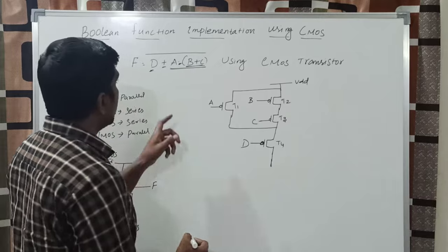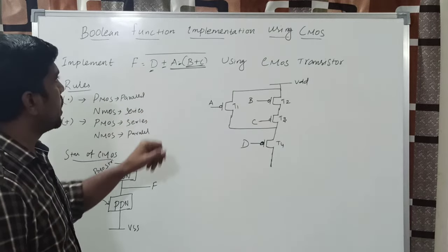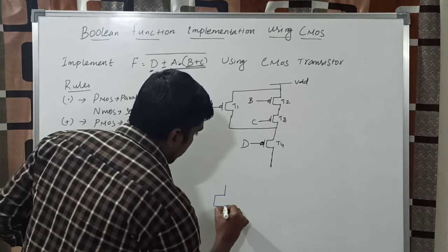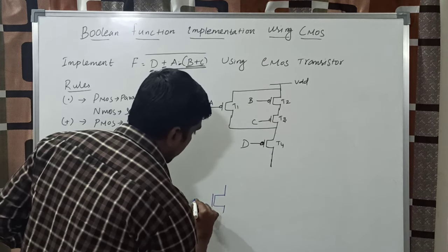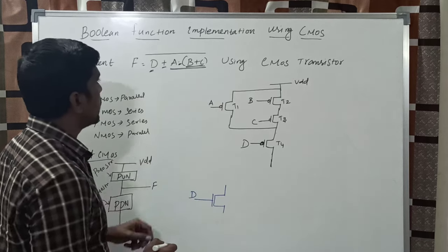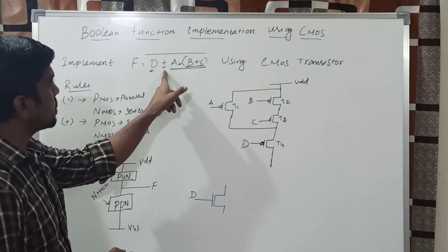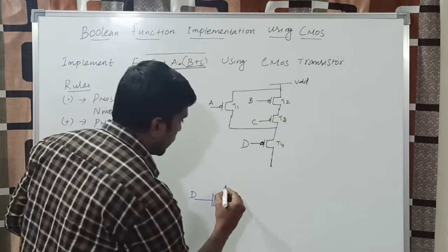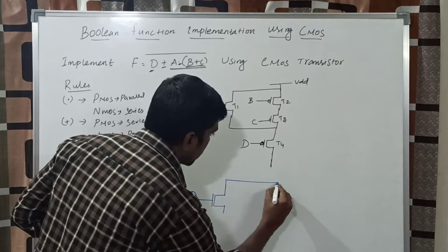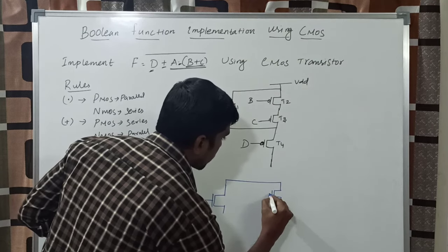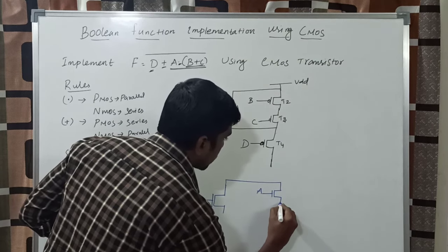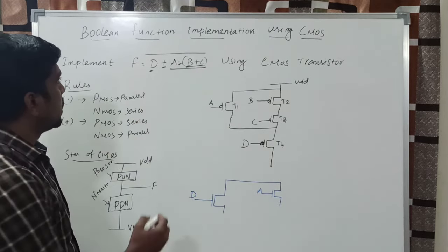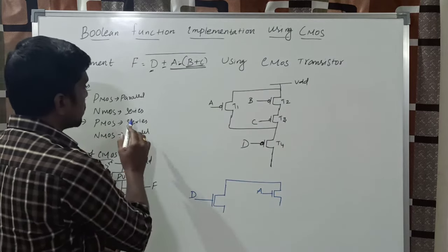Next, we design the pull-down network using the same equation. The first input is D — use one NMOS transistor with input D. The next function is plus A, so the plus signal represents NMOS connected in parallel with D. The next is dot of B plus C — dot represents multiplication, so NMOS transistors connect in series.